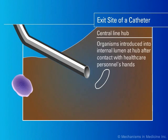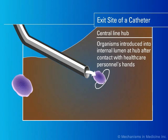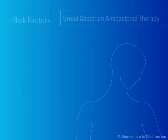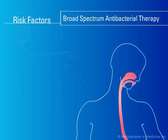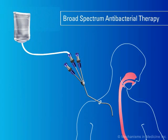Secondly, Candida microorganisms may colonize the internal lumen of the catheter at the central venous catheter's hub where it connects to IV tubing. This occurs as a result of manipulation of the catheter by healthcare personnel. Organisms then traverse the internal lumen of the catheter into the bloodstream. Third, a rare occurrence is the contamination of the infusate fluid, which then carries the microorganisms into the bloodstream.